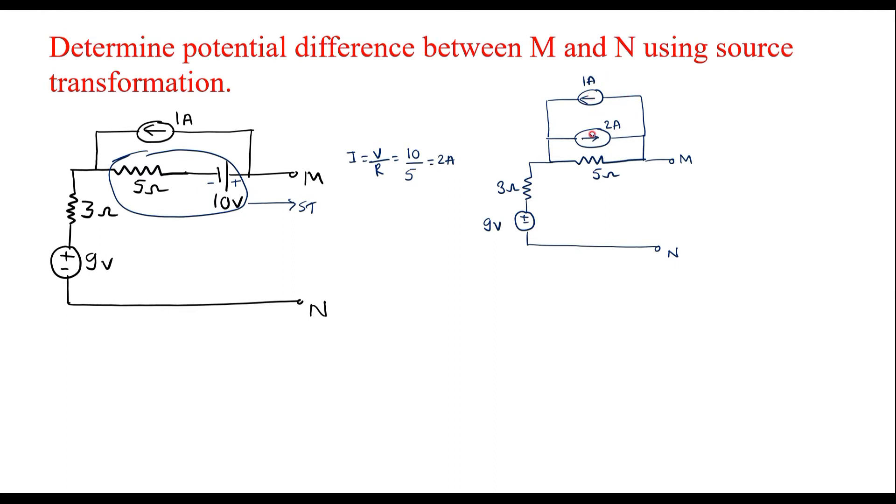Here we can observe that 2 current sources are in parallel. If the current sources are in parallel, those can be added up or we take the difference depending on the direction. Here we can observe that both current sources are in opposite direction. So we're supposed to take the difference of this. The difference is 1 amp.